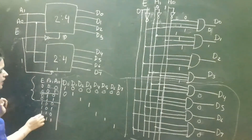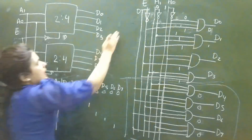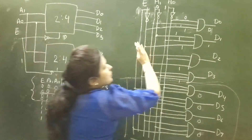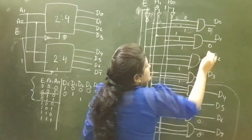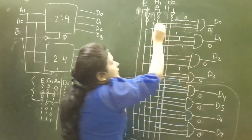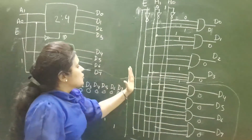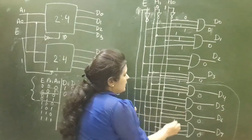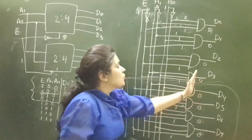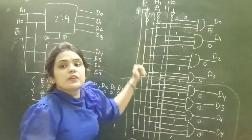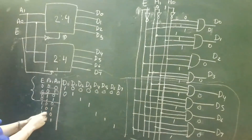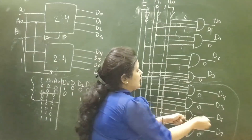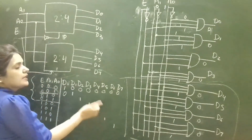Now suppose the combination is E equals 1, A1 equals 1, A0 equals 0 — combination 110. Complement of 1 is 0, so all outputs of the upper AND gates are 0. But 1 goes to all four lower gates, so their outputs depend on A1 and A0. With A1 equals 1 and A0 equals 0, the D6 gate output will be high, so D6 will be high.